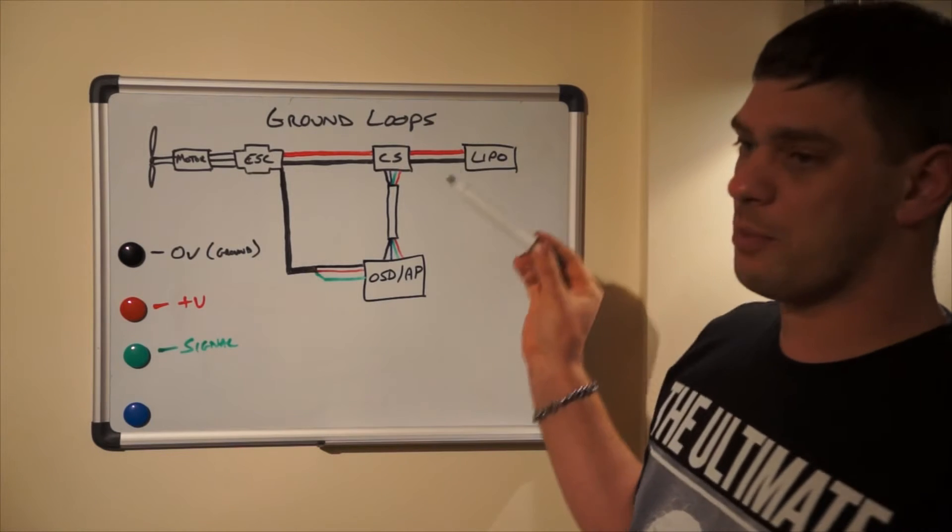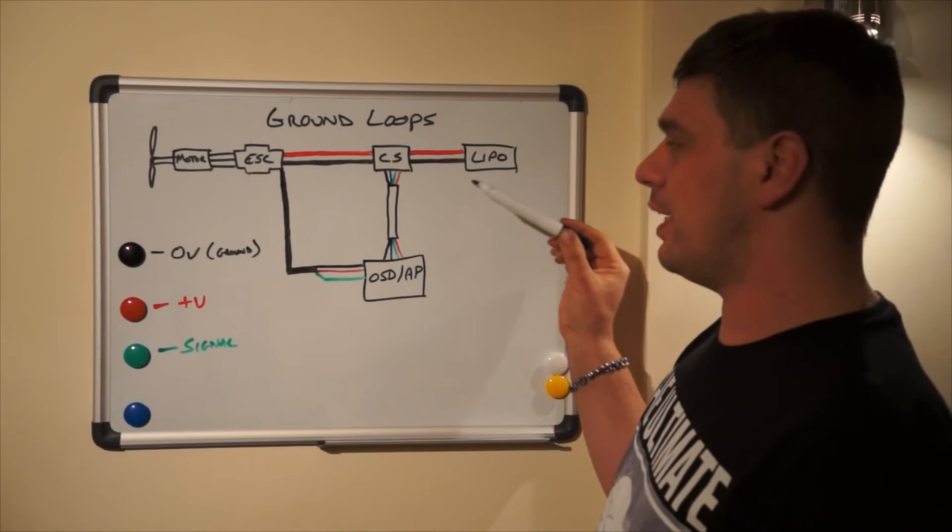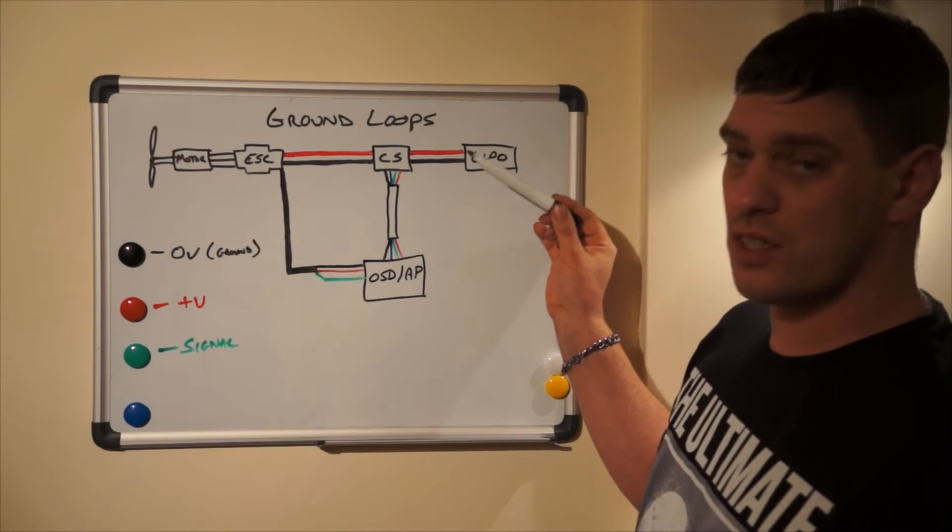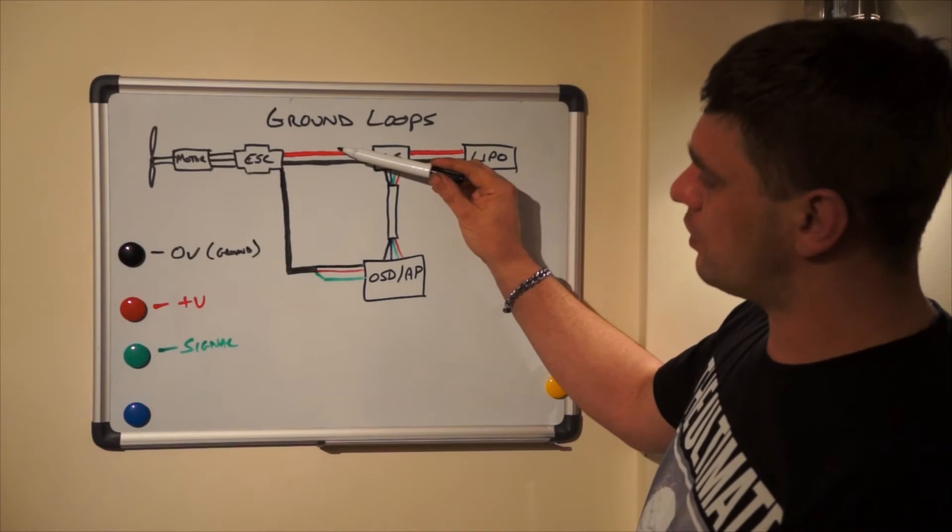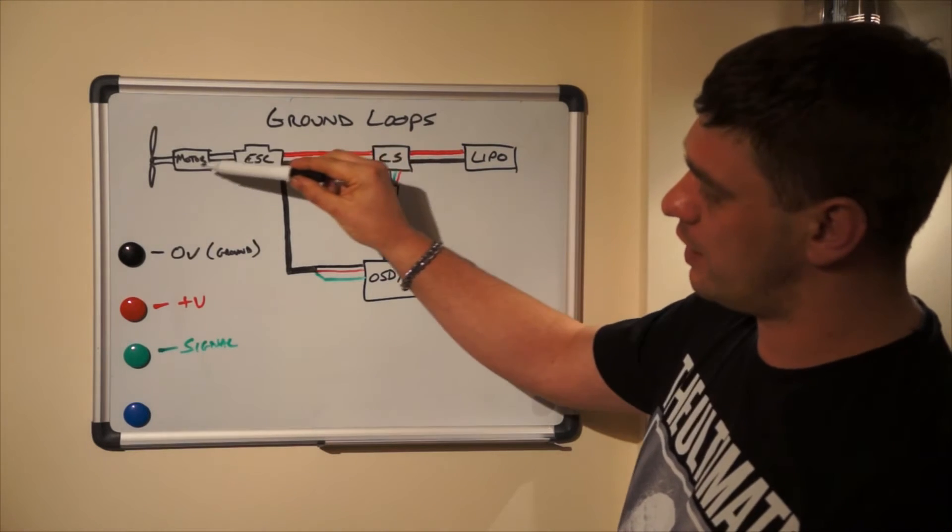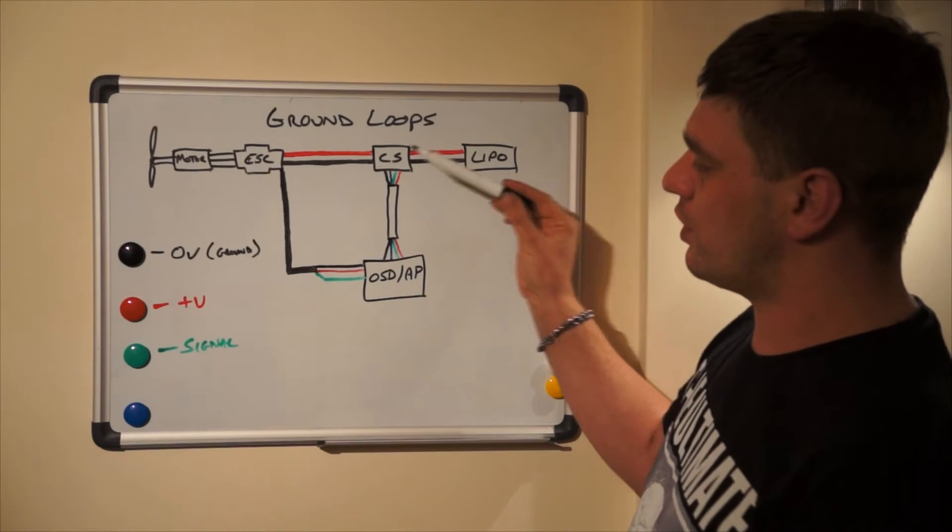Now ideally nothing happens and 8 times out of 10 nothing will happen. It will work as intended. You increase the throttle, the current in the positive and the negative goes up as it supplies the ESC, as the ESC supplies the motor. All is great.